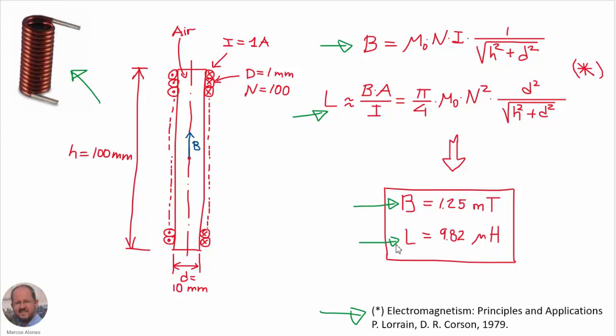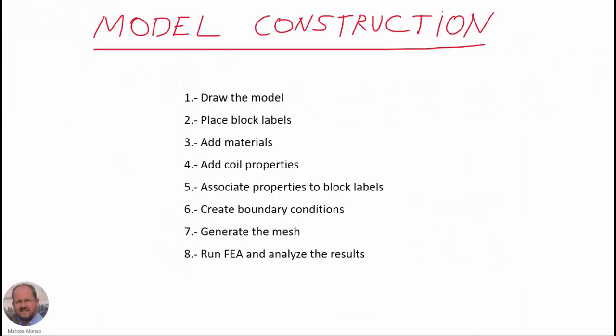Our objective using finite element analysis is to investigate how valid the assumption of constant magnetic flux density inside the coil is, and also to obtain a more accurate value for the inductance. The steps needed are: draw the model, place block labels, add materials, add coil properties, associate properties to block labels, create boundary conditions, generate the mesh, and finally run the finite element analysis and analyze the results.